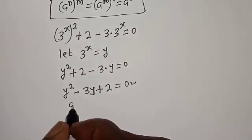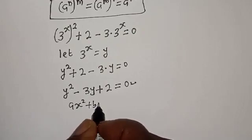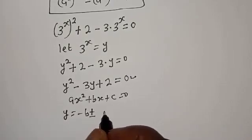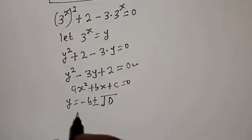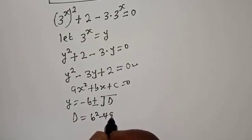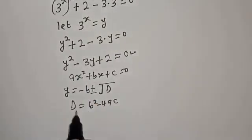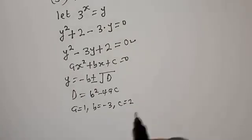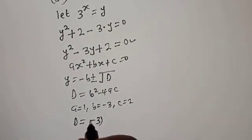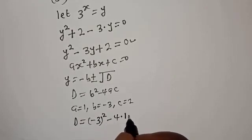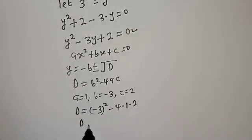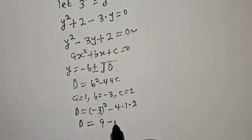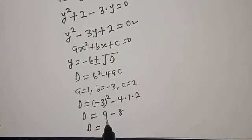From the quadratic general formula, for ay squared plus by plus c equals 0, y equals negative b plus or minus square root of the discriminant, over 2a, where the discriminant d equals b squared minus 4ac. From our equation, a equals 1, b equals negative 3, c equals 2. So d equals negative 3 squared minus 4 times 1 times 2, which is 9 minus 8, giving d equals 1.